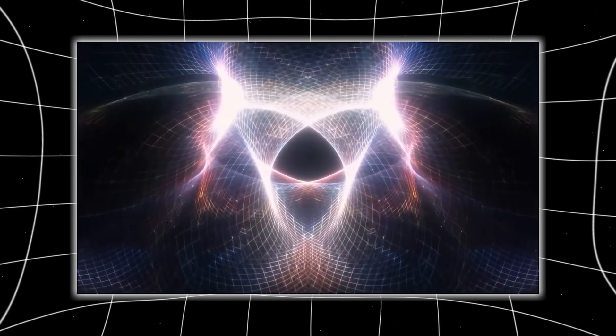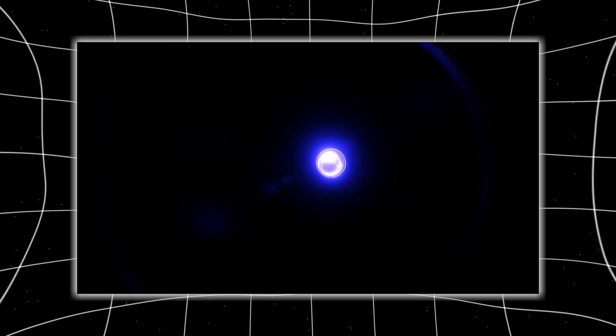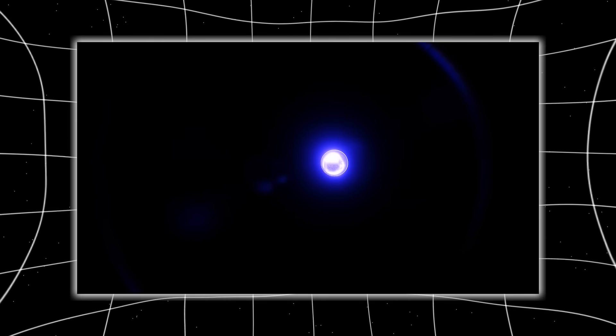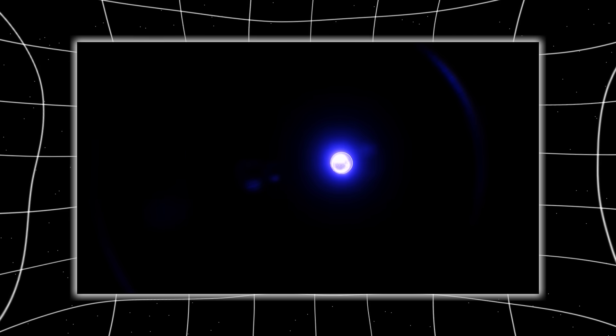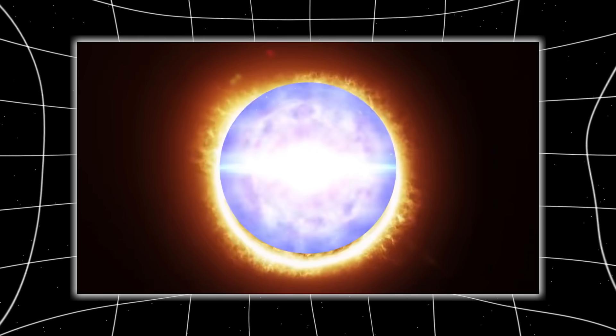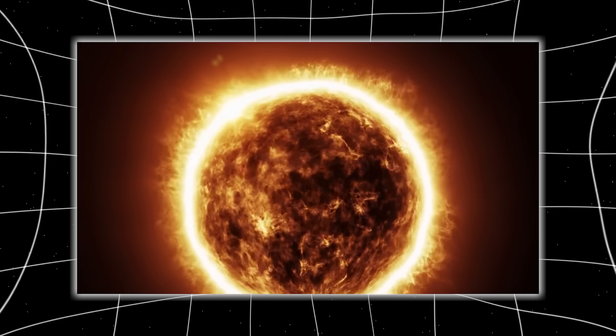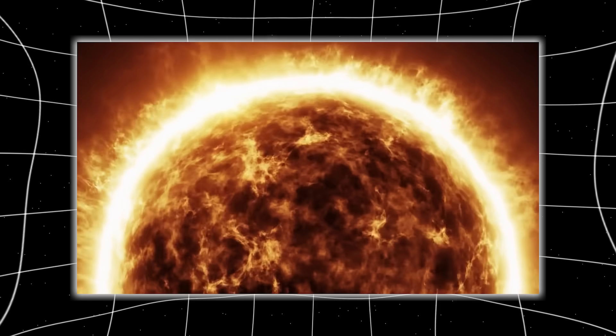The galaxies it's detecting, those ancient, massive, structured clusters, appear to be forming and evolving at rates that would require far more dark matter than current models allow. In fact, some of them would need dark matter densities so extreme that they would collapse into black holes under their own gravity. Others seem to be forming in regions where dark matter shouldn't have been dense enough to allow this level of gravitational binding so early.